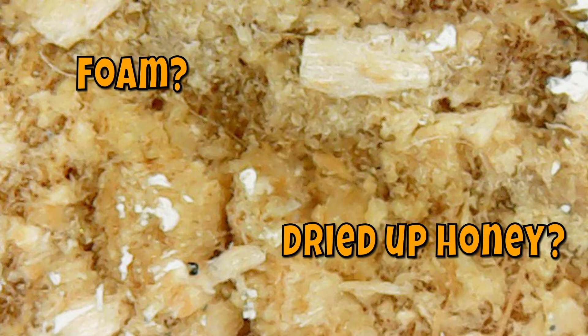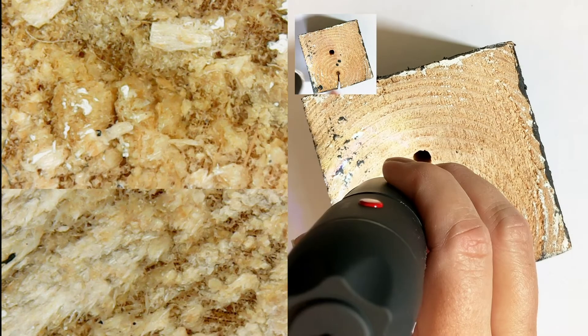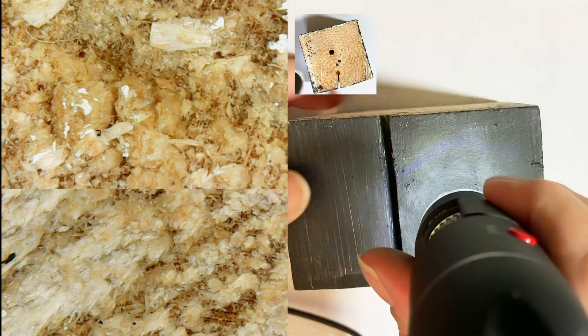What the is that? That looks like dried-out honey. Looks like foam or dried-out honey. Those are good guesses. In grain. It's wood. What?